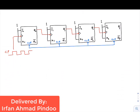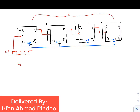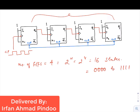Looking at the diagram, there are four JK flip-flops. As seen in my previous videos, three stages form an asynchronous 3-bit up counter. Here with 4 flip-flops the number of states are 2 to the power 4, which is 16. So in general this circuit displays states from all zeros to all ones, that is 0 to 15.